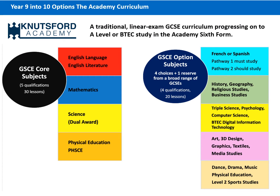We'll begin by looking at the academy curriculum, which is a traditional linear — meaning exams at the end of the course — GCSE curriculum that allows students to progress onto A level or BTEC study in our successful sixth form. GCSEs are on the new linear-based 1 to 9 grading system. On the left hand side of your screen you can see the GCSE core subjects, the same for the academy and the studio: the two English qualifications in language and literature, mathematics, science dual award, and a couple of hours of PE and PHSE each week — five qualifications in total across 30 hours of lessons.